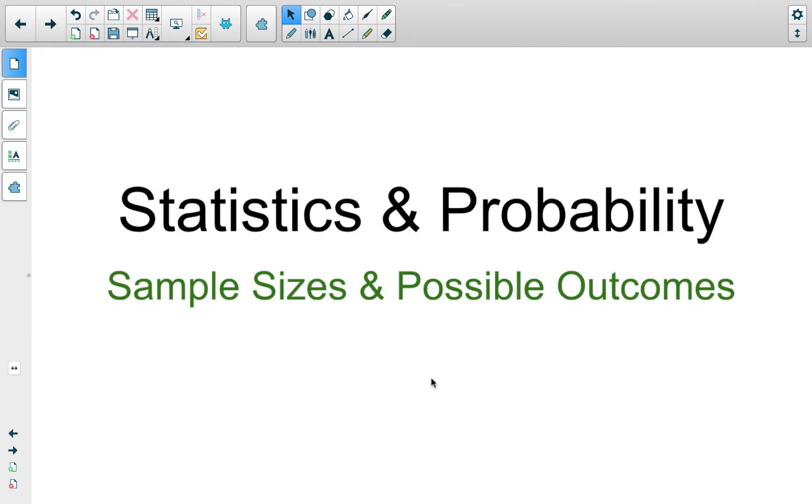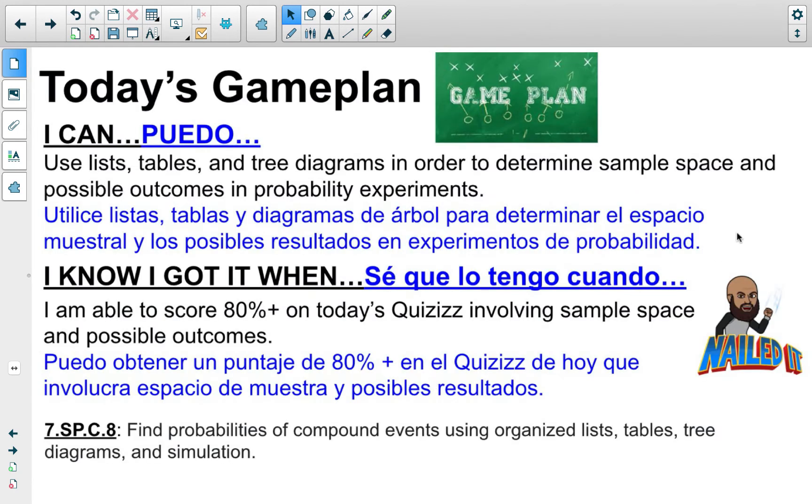Today we're going to look at sample sizes and possible outcomes, particularly with compound probabilities. Today you're going to use lists, tables, and tree diagrams in order to determine sample space and possible outcomes in probability experiments. You know you have this when you get 80% or higher on today's quizzes involving sample space and possible outcomes. Our standard has changed to 7-SPC-8, which deals with finding probability of compound events. We're talking about compound events, which we'll discuss throughout the lesson.